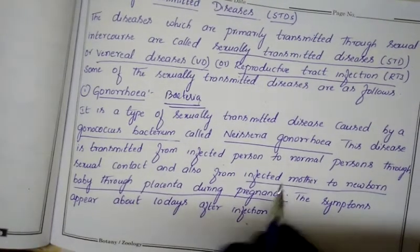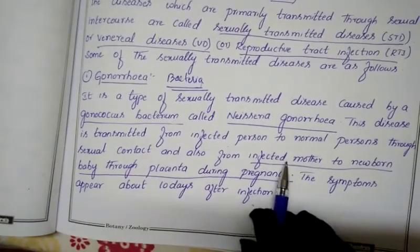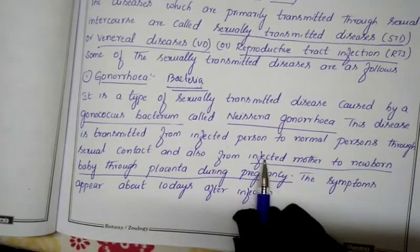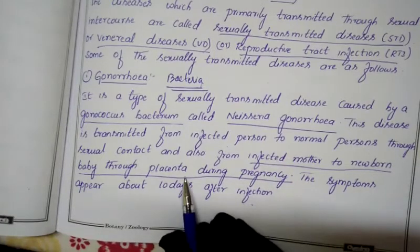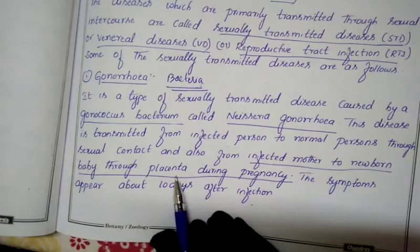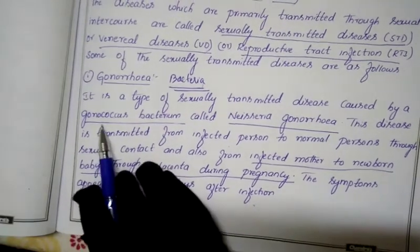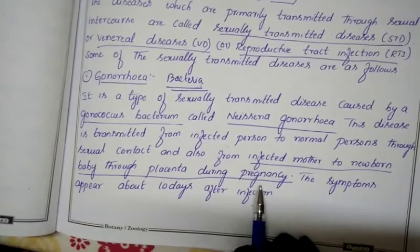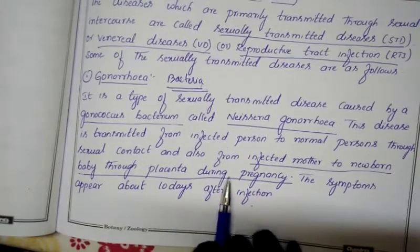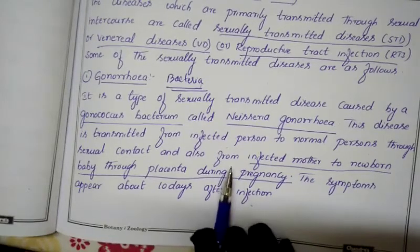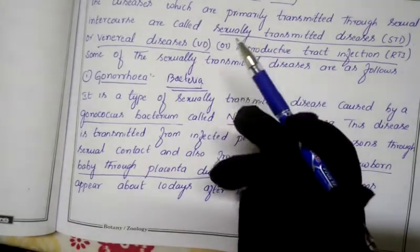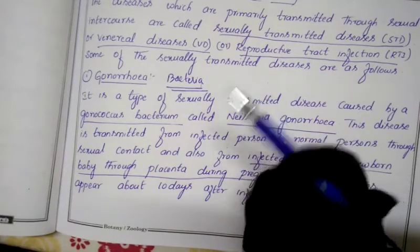Gonorrhea can also be transmitted from an infected mother to her newborn baby. If a pregnant female is infected, the pathogen Neisseria gonorrhoeae enters the developing embryo through the placenta, affecting the baby as well. So transmission occurs in two ways: through sexual contact, and from infected mother to child through the placenta.